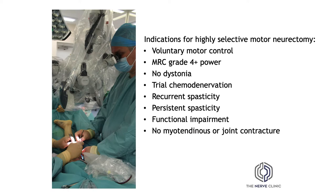The indications for selective motor neurectomy are voluntary motor control, MRC grade 4 plus of power, no dystonia, a previous trial of chemodenervation showing benefit with recurrent and persistent spasticity, and a functional impairment without significant joint contractures.